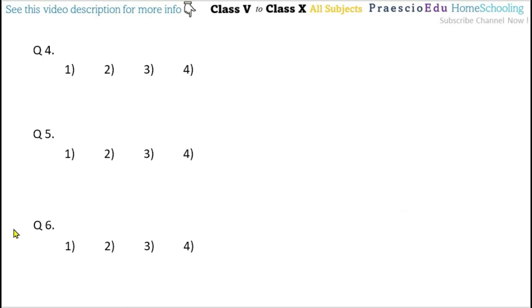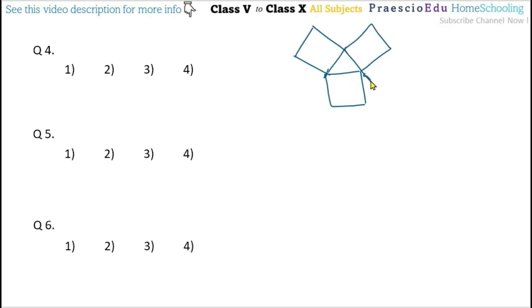Question number 4: what is the perimeter of the given figure? Counting the outer boundary sides only — internal lines we should not consider. So: 1, 2, 3, 4, 5, 6, 7, 8, 9.